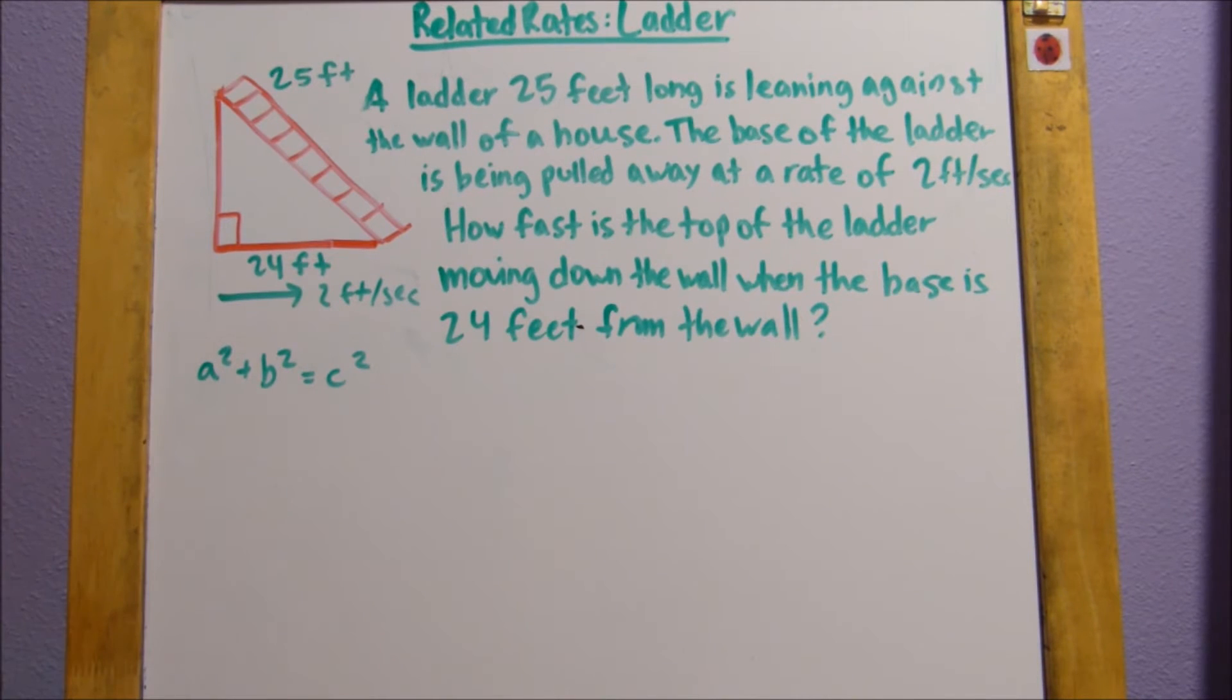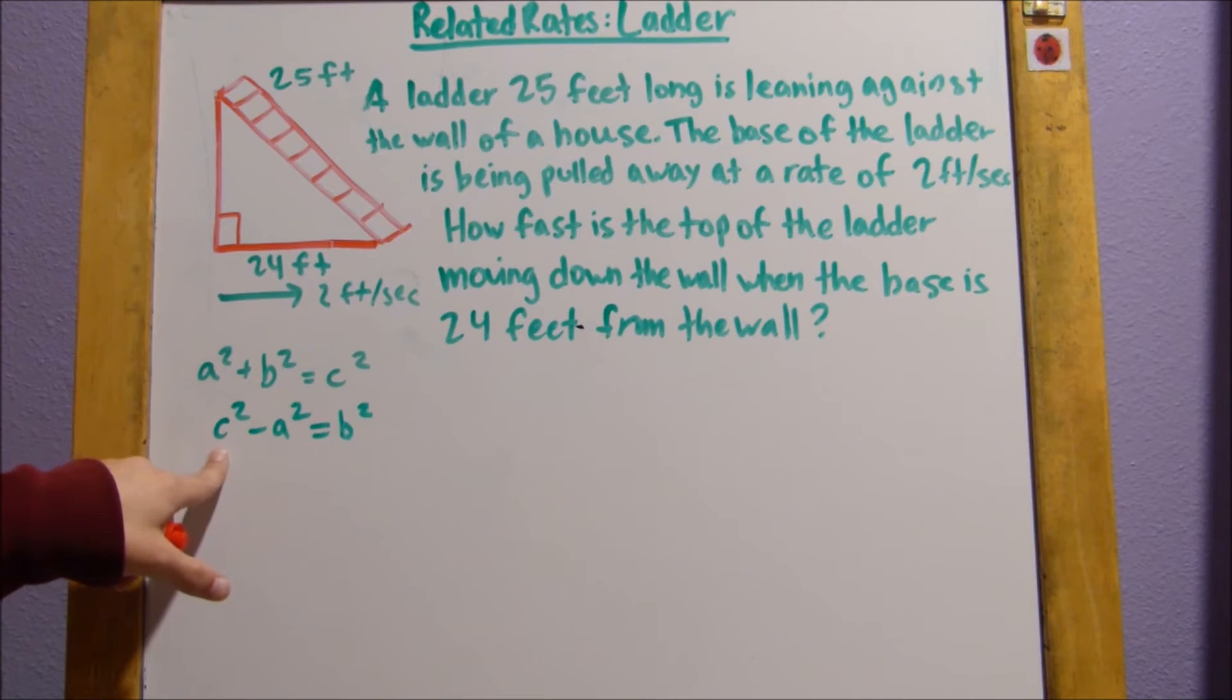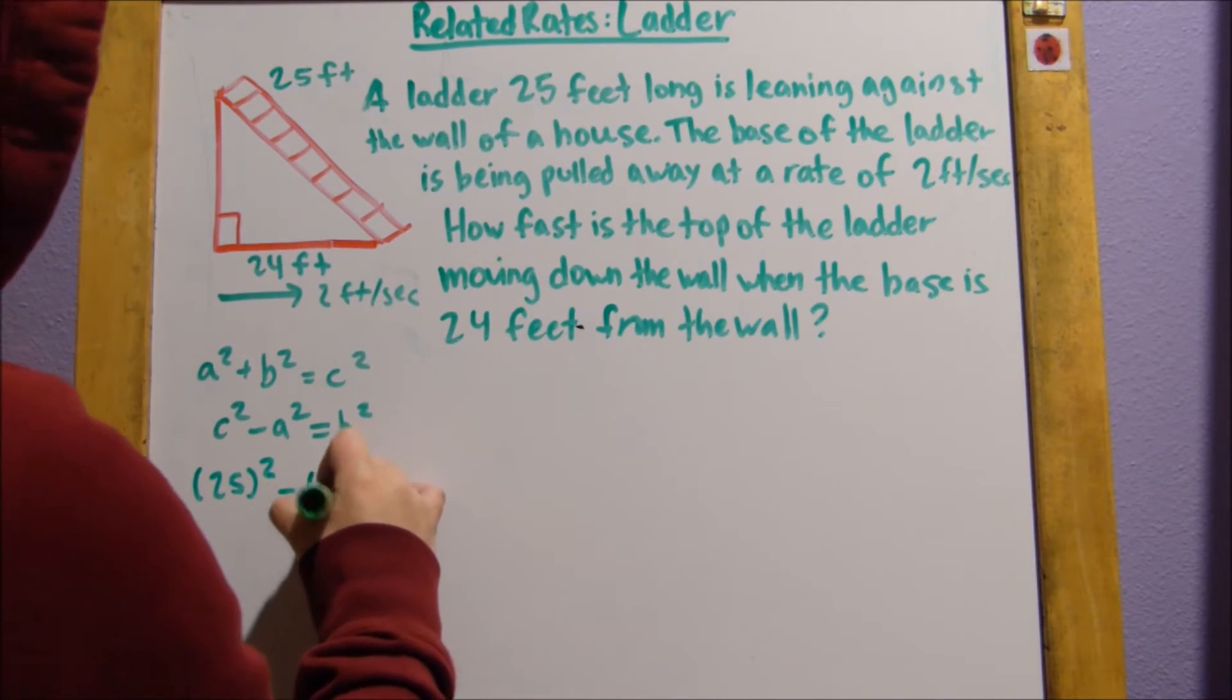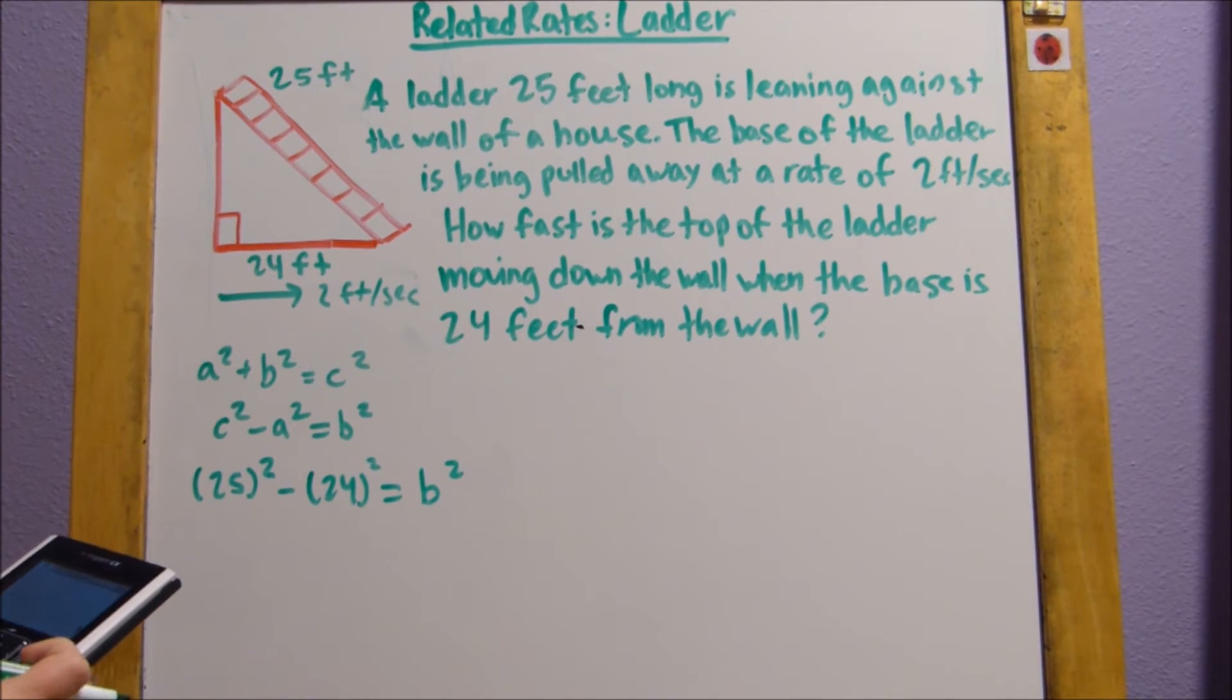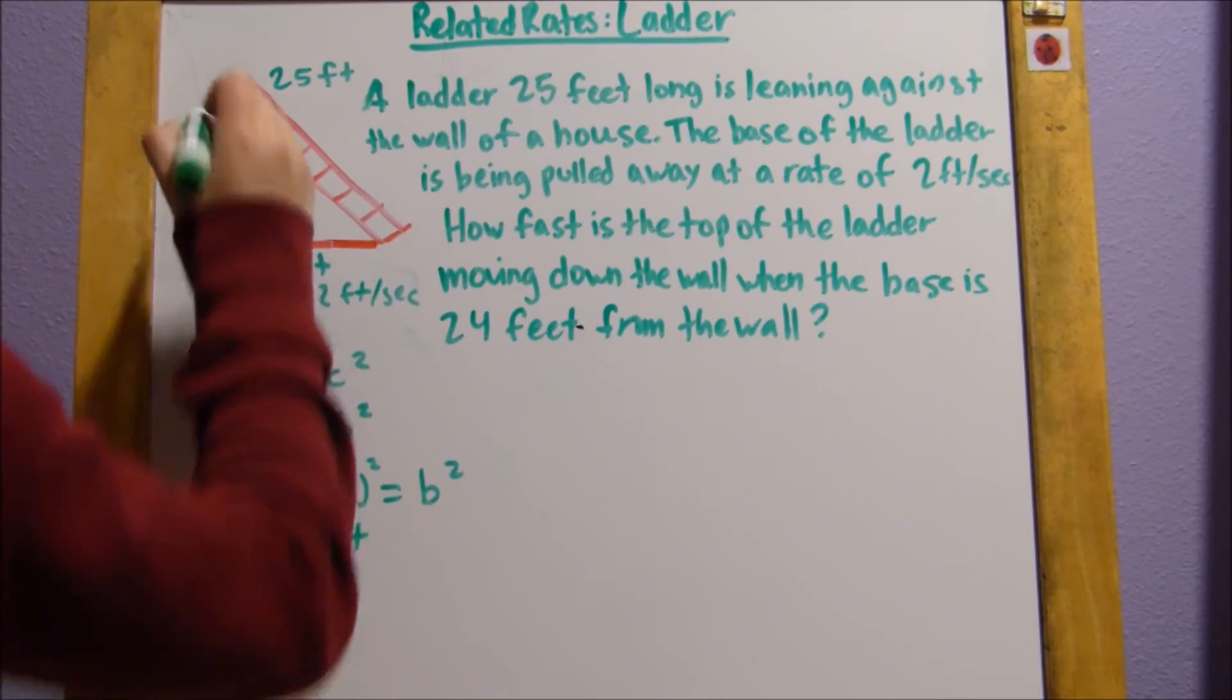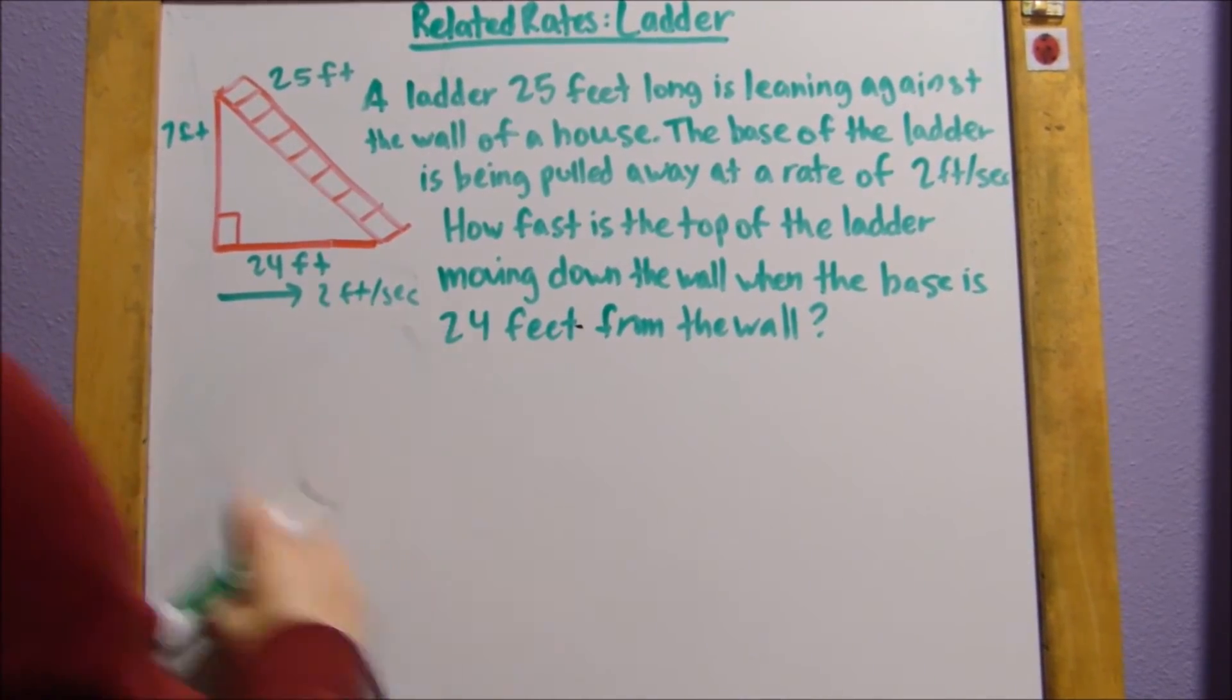So basically, our Pythagorean Theorem is a² + b² = c², where our c is always our hypotenuse, our longest side. So we can rewrite this so that we're solving for this side length, which we'll call b. So c² - a² = b². We know c, our hypotenuse, is 25. 25² minus a is going to be this side length, 24², equals b². Now, if I just plug that into my calculator, I end up getting 49. So b² is 49, so we can say that b is 7 feet.